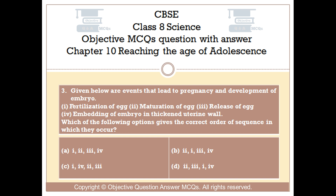Option A: 1, 2, 3, 4. Option B: 2, 1, 3, 4. Option C: 1, 4, 2, 3. Option D: 2, 3, 1, 4. The right answer is Option D: 2, 3, 1, 4.